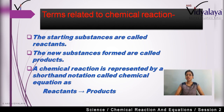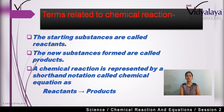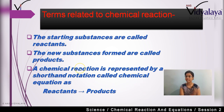Second, what are the terms related to chemical reactions? The first thing is that the starting substances are called reactants. Suppose a chemical reaction occurs in this way: reactants give products. So the products that are formed — how are they formed? When reactants react. So the substances that react, that is, the starting substances, what do we call them? Reactants.